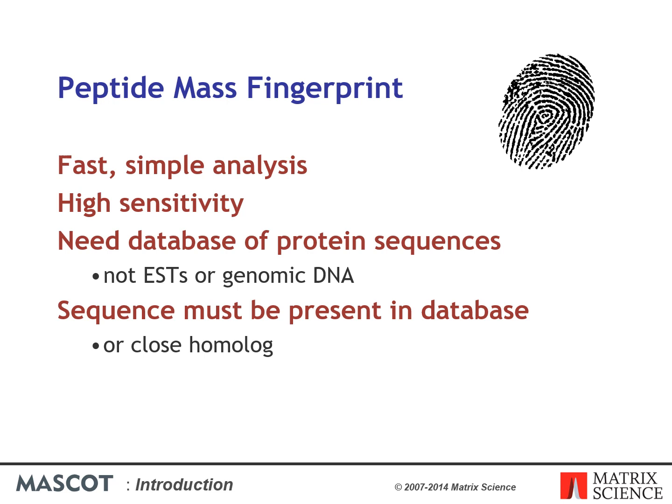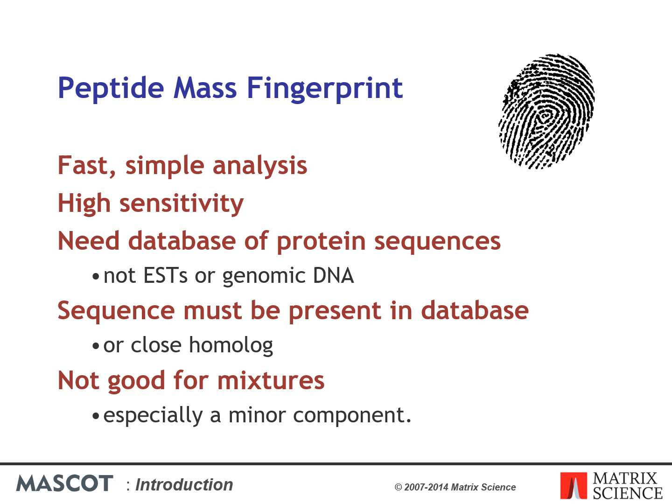If the protein sequence or something very similar is not in the database, the method will fail. If you are studying a well-characterised organism such as human, mouse, or yeast, this is unlikely to be a problem. If you are studying a virus or a plant with an unsequenced genome, it can be a major problem, and you depend on getting matches to homologous proteins from related organisms. The most important limitation concerns mixtures — if data quality is very good, it may be possible to identify a two-component mixture, but it's never possible to identify a minor component.